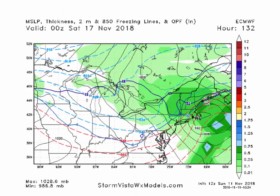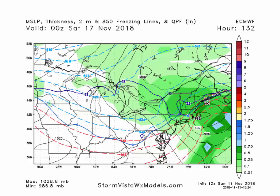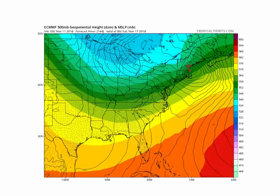By 132 hours on the 12Z European, the low is now over Cape Cod. The rain-snow line shows all snow in New York State, northern Vermont, and Maine — fairly impressive. Also on the 0Z run, the low is in that same general area — Cape Cod, southeastern New York — with a lot of cold air coming in behind the systems. There's no doubt about that.